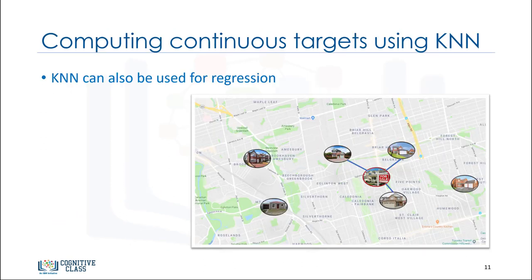Nearest neighbors analysis can also be used to compute values for a continuous target. In this situation, the average or median target value of the nearest neighbors is used to obtain the predicted value for the new case. For example, assume that you are predicting the price of a home based on its feature set, such as number of rooms, square footage, the year it was built, and so on. You can easily find the three nearest neighbor houses, of course not only based on distance, but also based on all the attributes, and then predict the price of the house as the median of neighbors. This concludes this video.